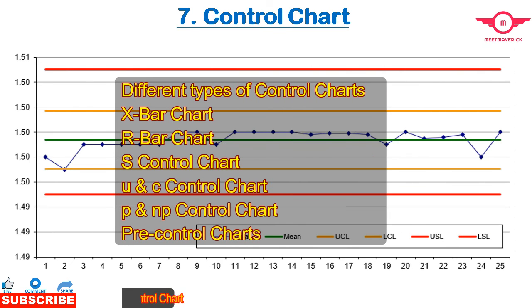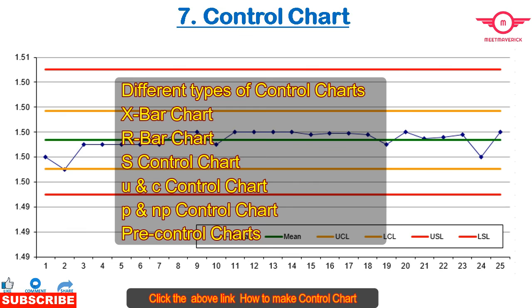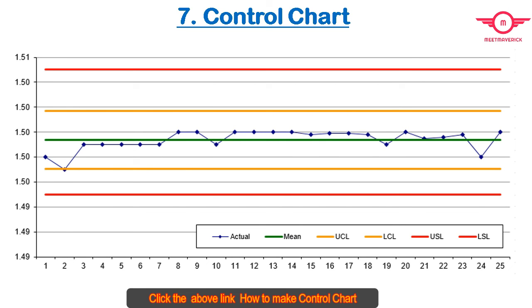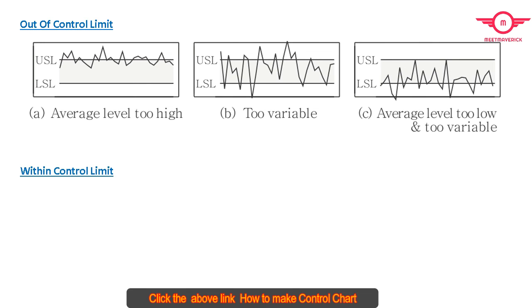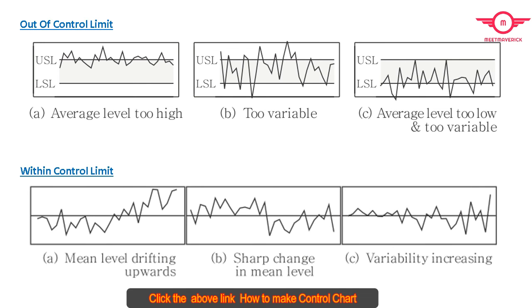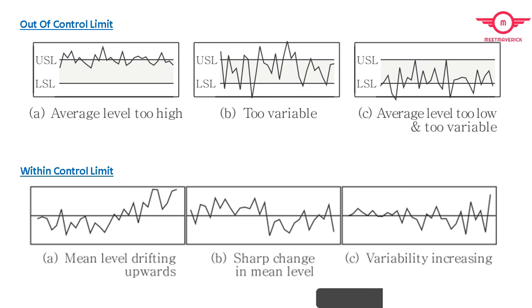The Control Chart is also known as the Shewhart Chart, named after Walter A. Shewhart. The Control Chart is used to study how a process changes over a period of time. It is the best forecasting tool as compared to other QC tools. When used for process monitoring, it helps the user determine the appropriate type of action to take on the process depending on the degree of variation in the process.